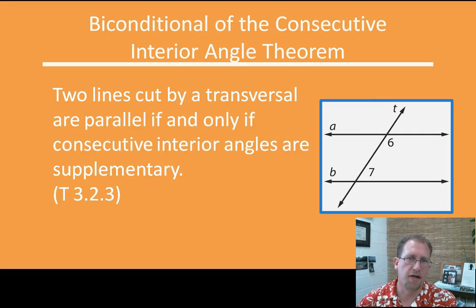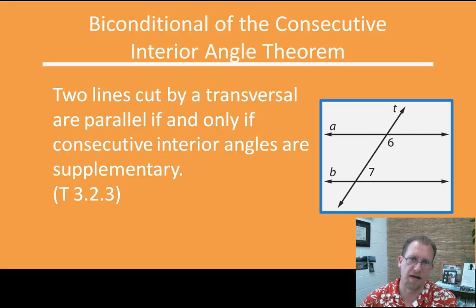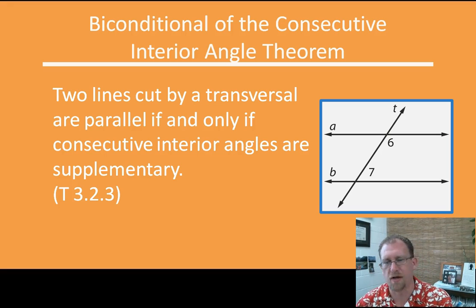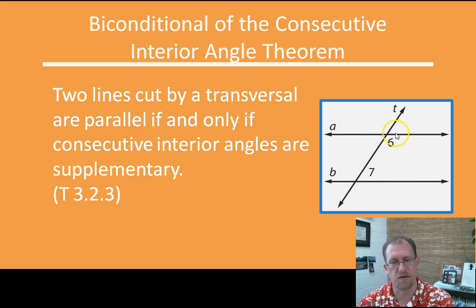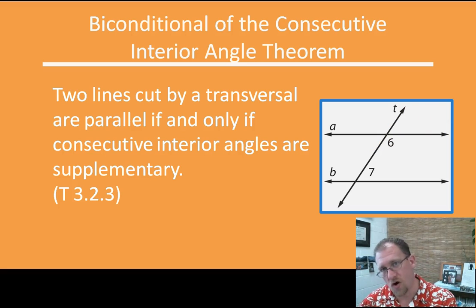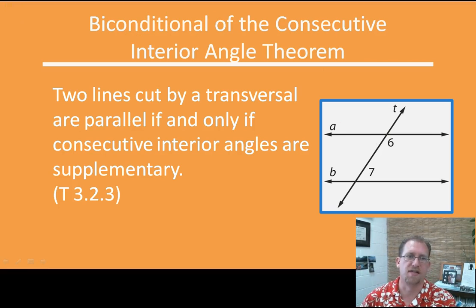We already learned the consecutive interior angle theorem yesterday. Now we're going to look at the biconditional of that: two lines cut by a transversal are parallel if and only if the consecutive interior angles are supplementary. We learned that if the lines are parallel, then the consecutive interior angles are supplementary. Now we're going to learn that if those angles are supplementary, then the lines are also parallel — going forward and backward through the same ideas.